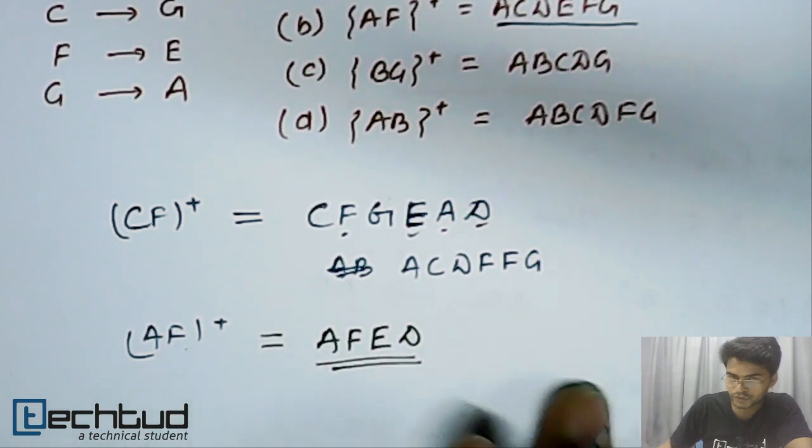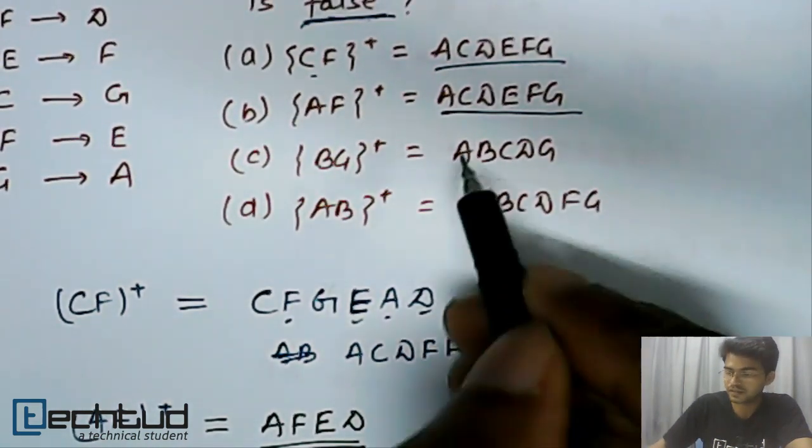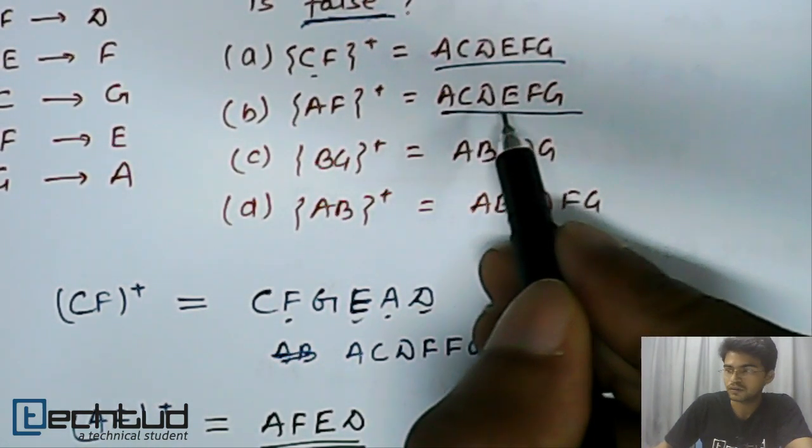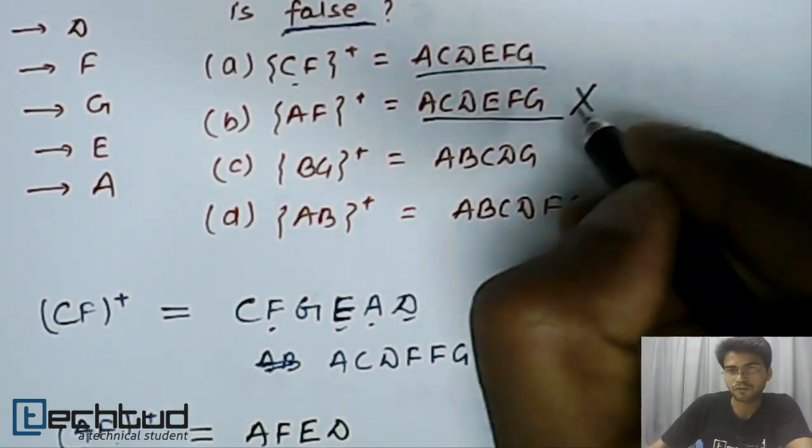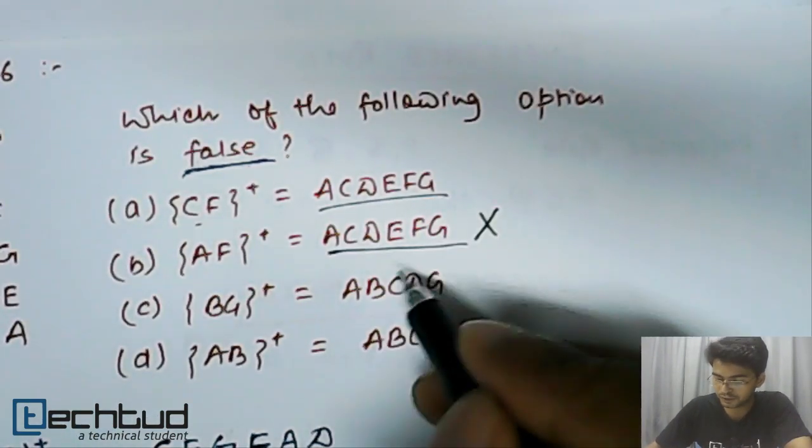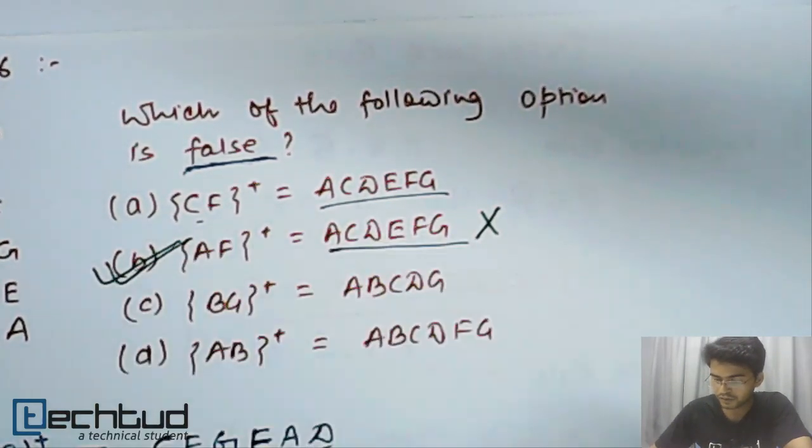So, this is A, F closure and the option given is this one. So, this is false. False means this is as per the question the correct option. Okay.